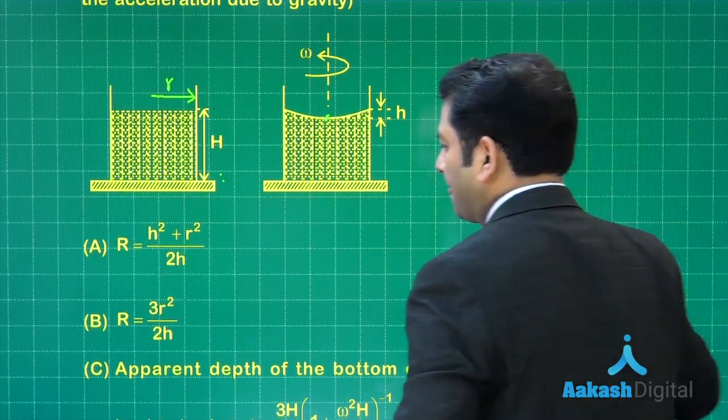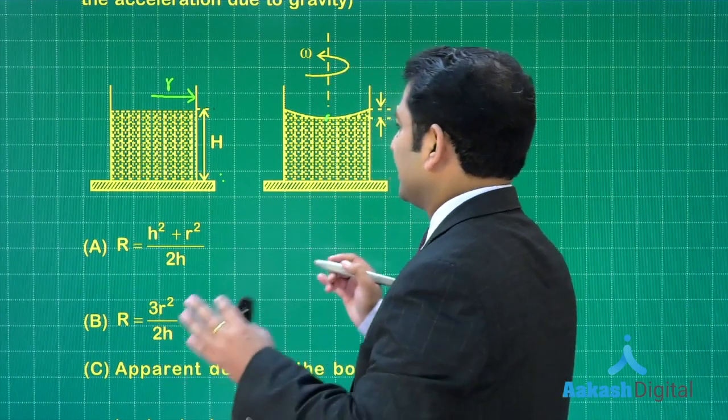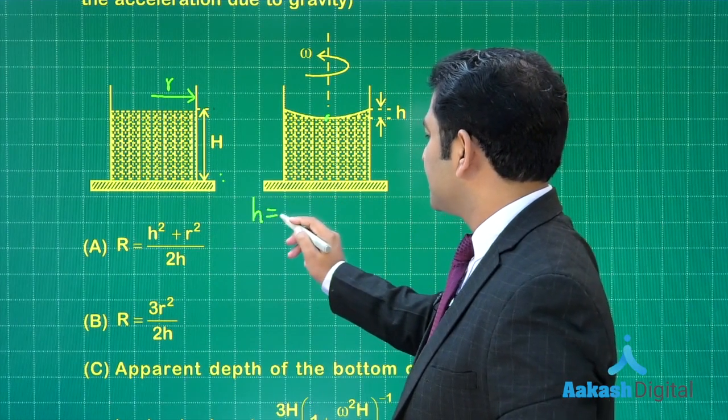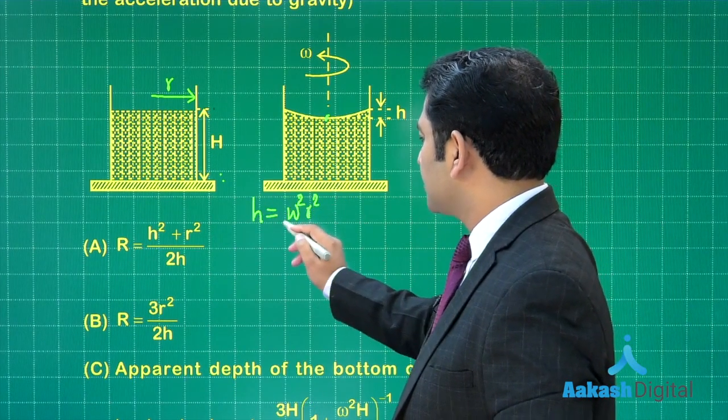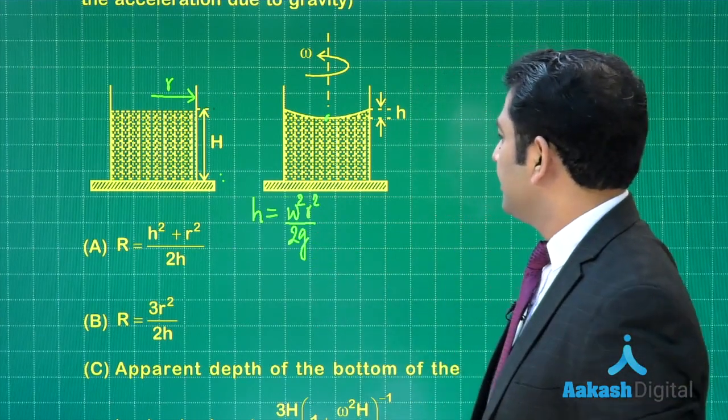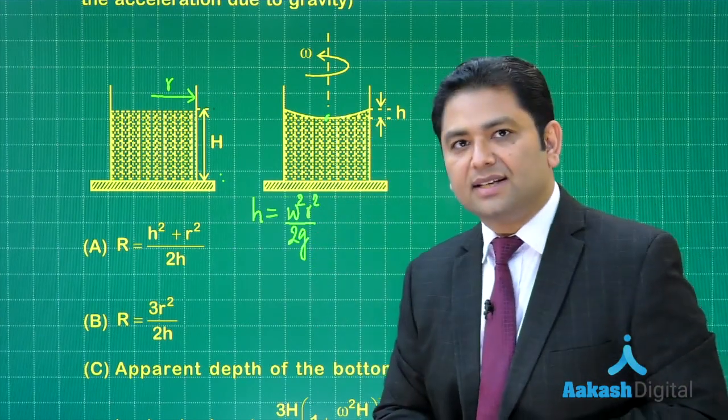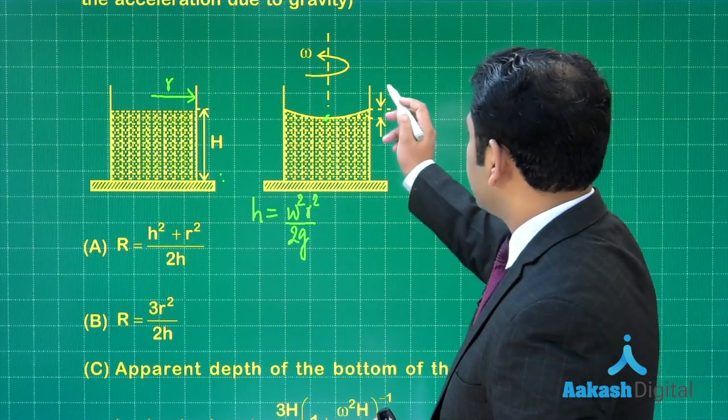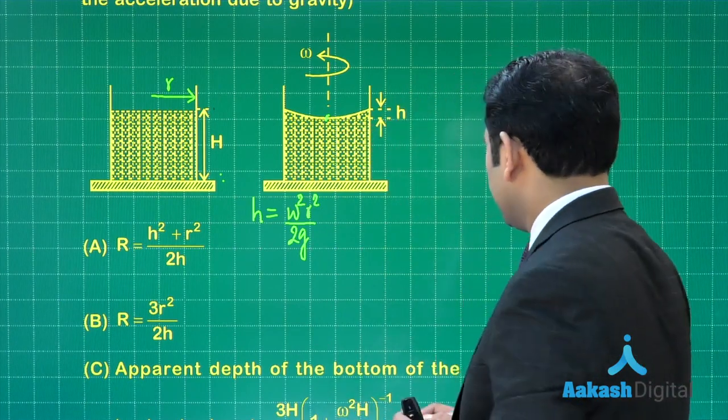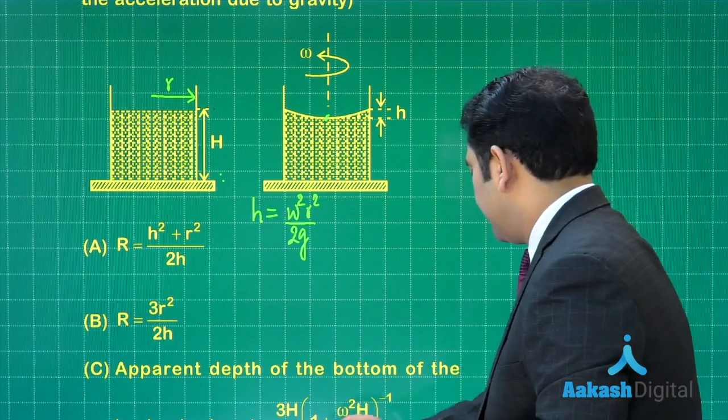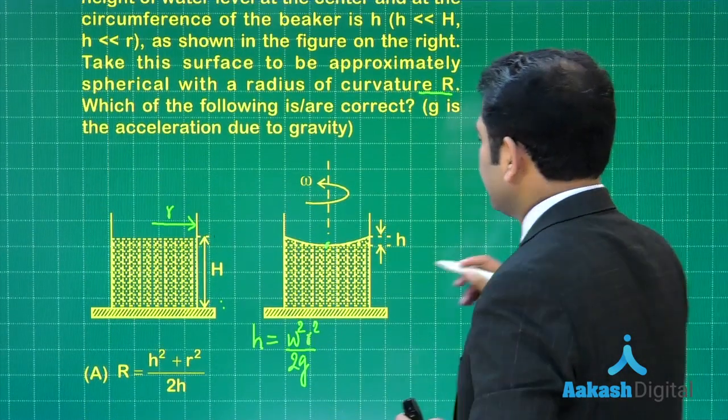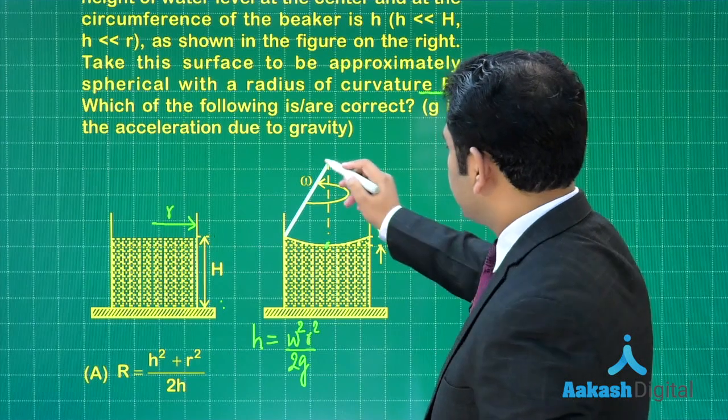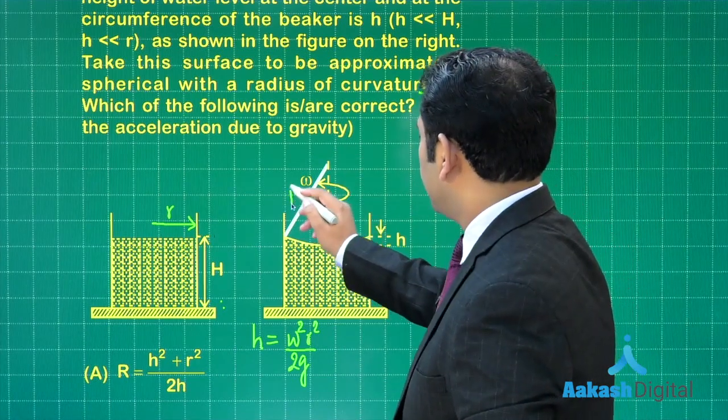The first thing is that we got to relate capital R, small r with h. Let us see. This is quite a famous relationship: h is omega square r square divided by 2g, the relationship between height and the radius of the beaker. But in order to relate capital R, the radius of curvature of this, we need to be a bit clever in terms of figure. If I say the center of curvature of this particular surface is here, then this is going to be capital R.